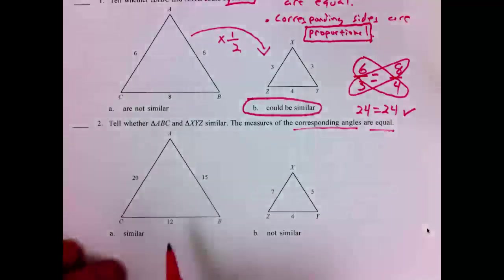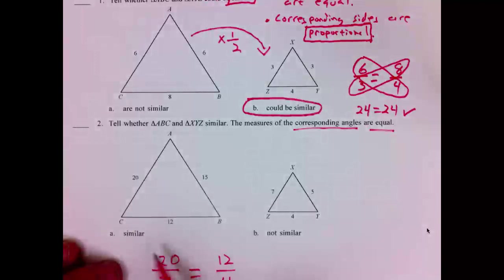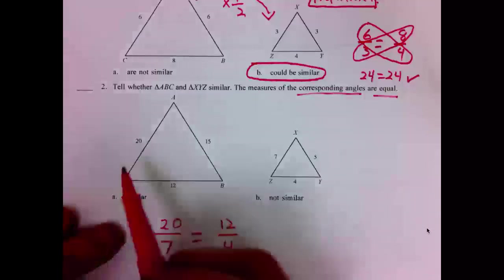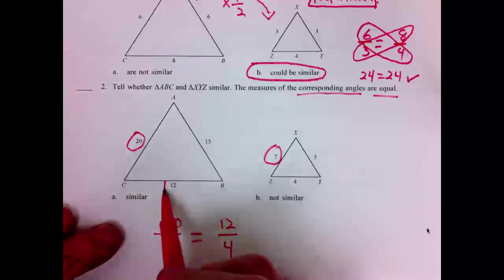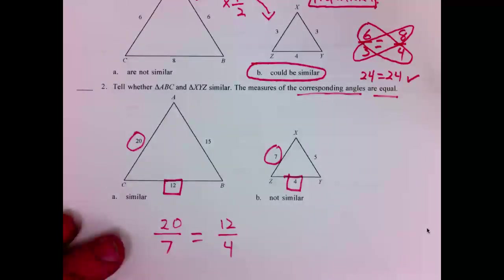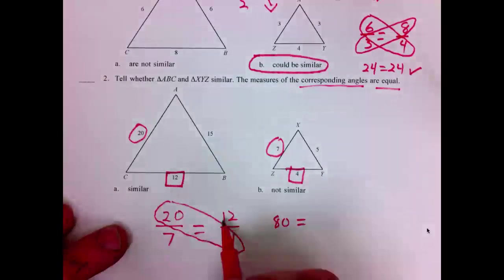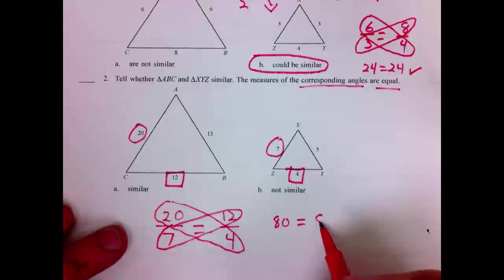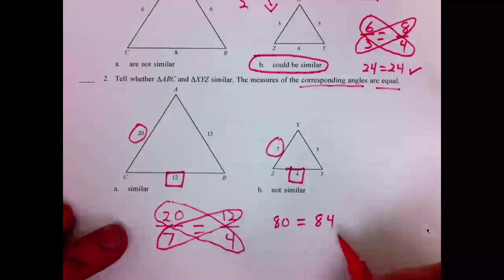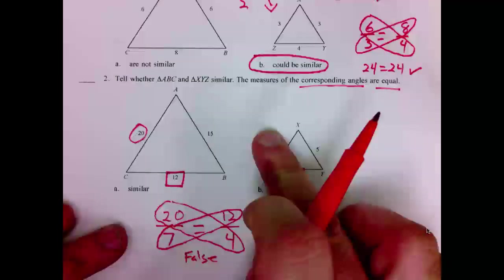I will use my proportion to verify. 20 corresponds with 7. Is that equal to 12 corresponds with 4? We want to see, is this an equivalent proportion? Again, 20 corresponds with 7. 12 corresponds with 4. 20 over 7 equal to 12 over 4. Let's see if they are indeed equal. Well, 20 times 4 is 80. 7 times 12, that is 84. Indeed, 80 is not equal to 84. This statement is false. Thus, these two are not similar.